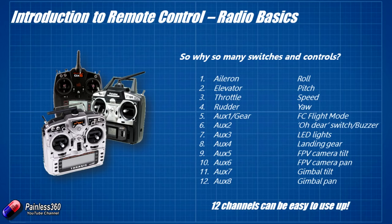As you can see, you very quickly when using more sophisticated models start to run out of switches. Bigger radios like the Taranis that seem to be bristling with lots of different knobs and switches can get very full very quickly. I started with a DX7 and thought seven channels would be more than I'd ever need, but now I regularly use eight or nine on the crafts I'm flying.